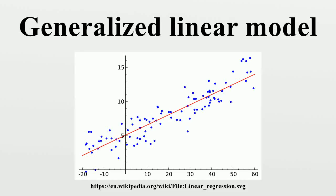In statistics, the generalized linear model is a flexible generalization of ordinary linear regression that allows for response variables that have error distribution models other than a normal distribution. The GLM generalizes linear regression by allowing the linear model to be related to the response variable via a link function, and by allowing the magnitude of the variance of each measurement to be a function of its predicted value.